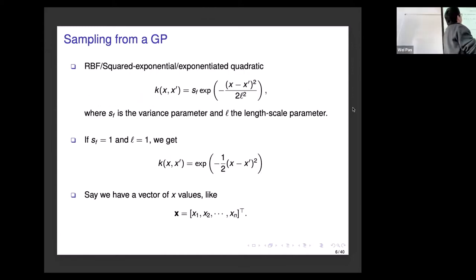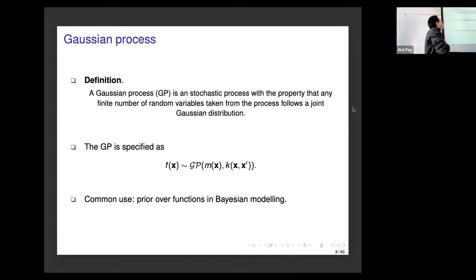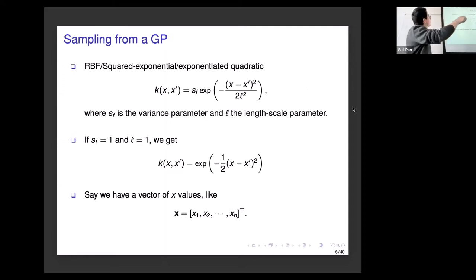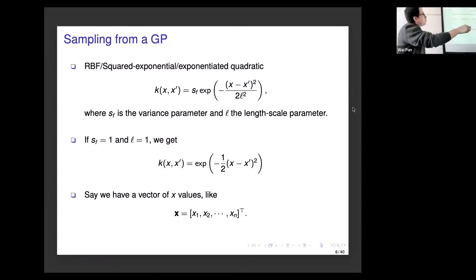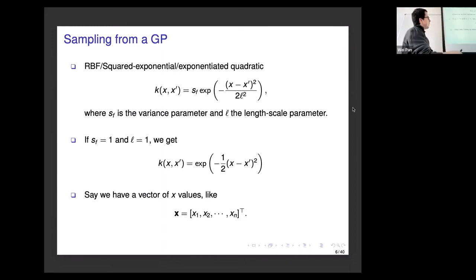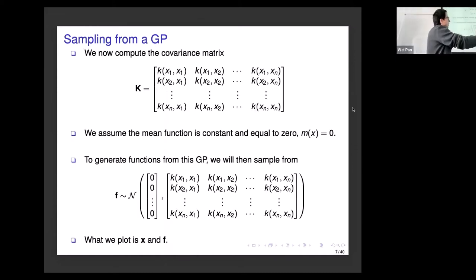In machine learning, we usually assume the mean function is zero and care more about the covariance. One typical example is the radial basis function or squared exponential kernel, defined by two parameters: sigma_f, the variance parameter, and l, the length scale parameter. If I fix those parameters to one, I get this expression for the covariance function. For inputs x_1 to x_n, I compute a covariance matrix where each entry is that function evaluated for a pair of inputs. With zero mean and this covariance, I get a multivariate Gaussian distribution describing these functions.